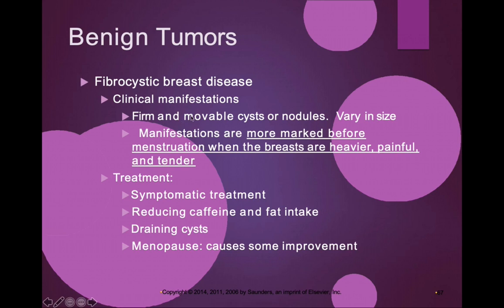The cysts are typically firm, movable, and can vary in size. Manifestations are more noticeable before menstruation when the breasts are heavier, painful, and tender — responsive to hormonal changes. This can occur during menses or any hormonal change including pregnancy, causing changes in breast tissue density.